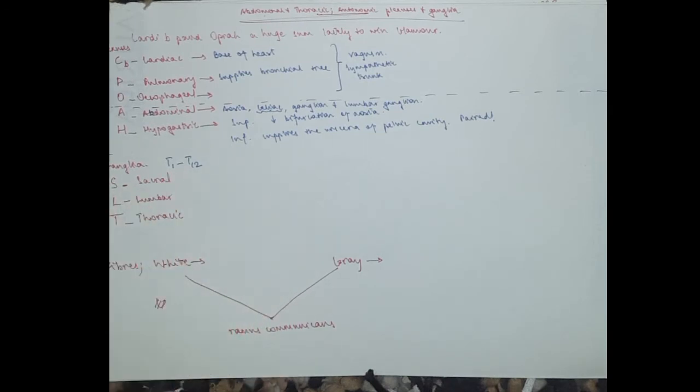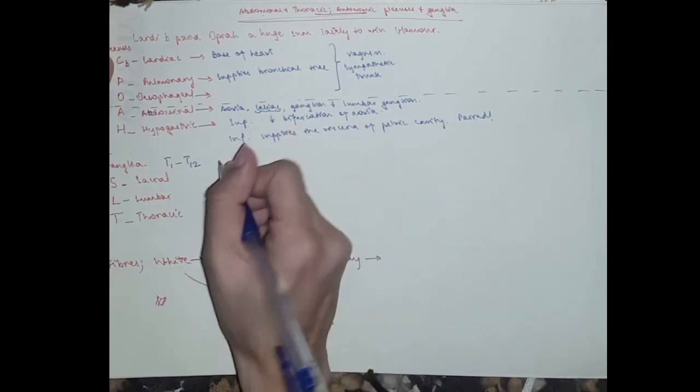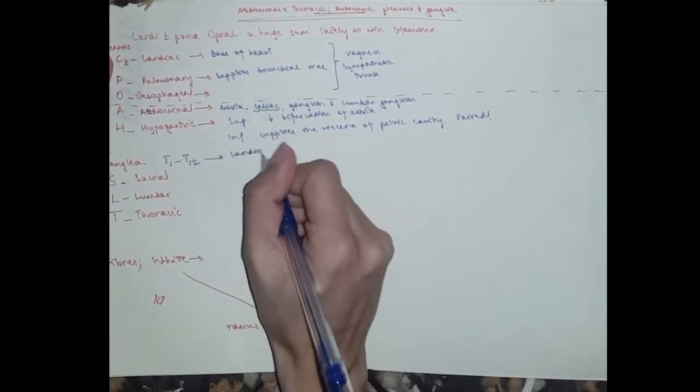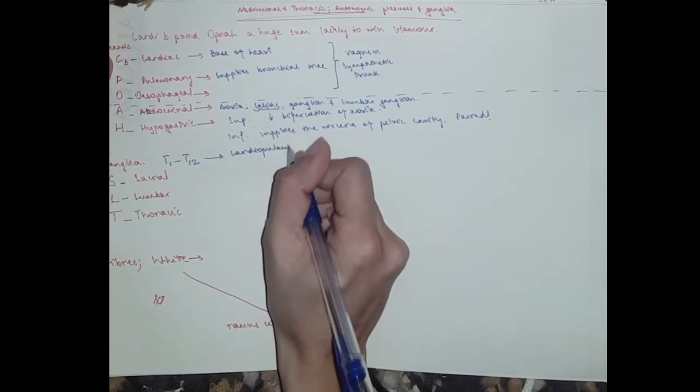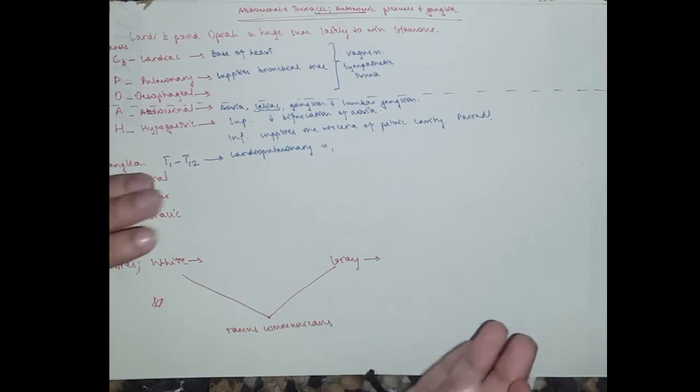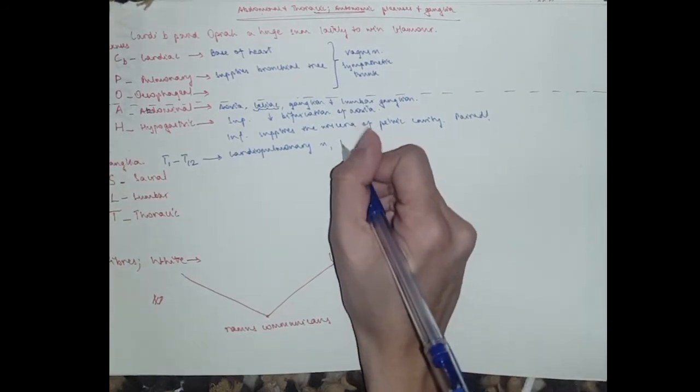These ones. So they start from T1 to T12, right. They're the thoracic paravertebral ganglia. And the nerves, obviously, I can write them for you as well. The nerves are cardiopulmonary nerves.